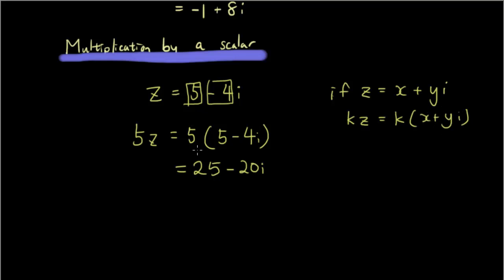Okay, so exactly the same as what we've done here, where 5 is k. And then we expanded it out, so kz is equal to kx plus kyi.